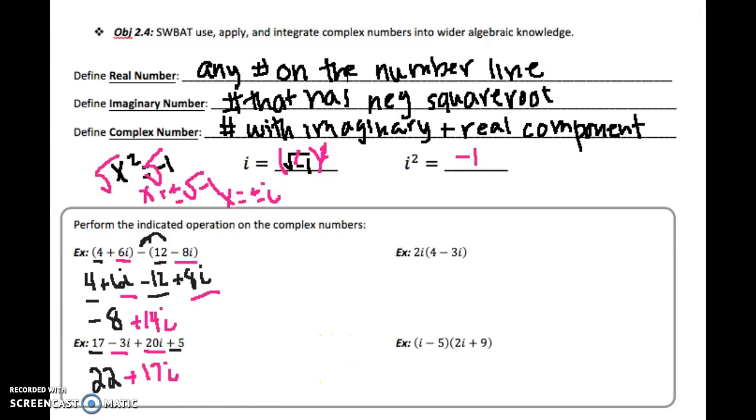All right, on this side here we have some multiplication. We're just going to distribute like we normally would, so that 2i needs to go to both terms. So 2i times 4 is going to be 8i. And then 2i times negative 3i is going to be minus 6i squared. And then we're just going to use the fact that we know that i squared is equal to negative 1. So instead of writing i squared, I'm going to substitute in negative 1. So we have 8i minus 6 times negative 1, and so we're going to get 8i plus 6. So this right here is my answer. And again, this is a complex number. We cannot combine this anymore together.